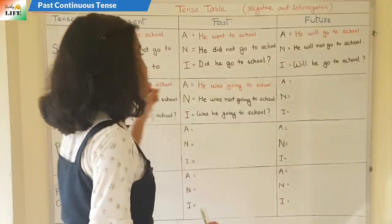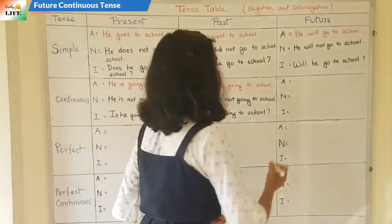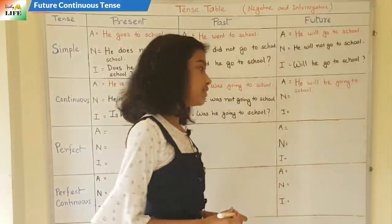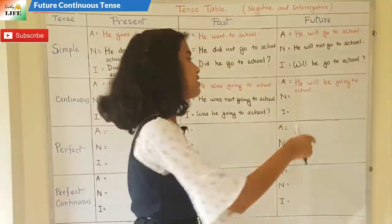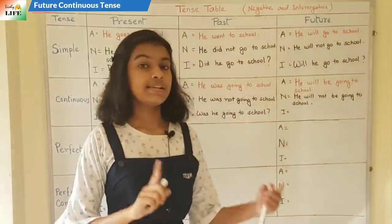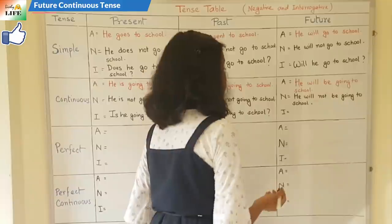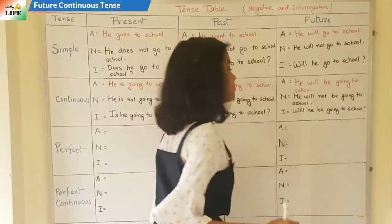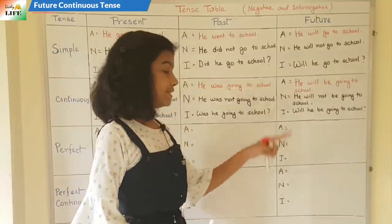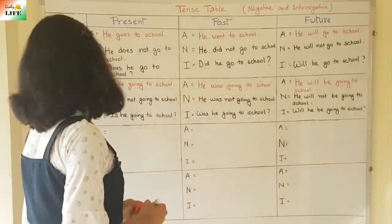Next is future continuous tense. The affirmative form is: 'He will be going to school.' For the negative form: 'He will not be going to school.' For the interrogative form, we interchange the first two words — will and he: 'Will he be going to school?' The three forms: affirmative — 'He will be going to school'; negative — 'He will not be going to school'; interrogative — 'Will he be going to school?'